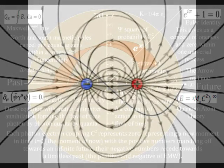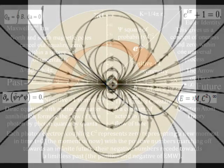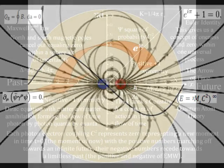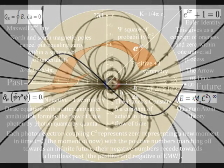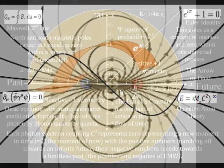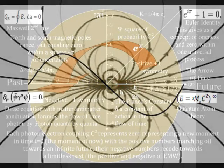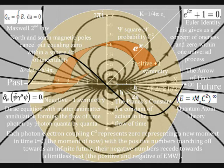On the lower left-hand side of the diagram, we have Dirac's equation, that also equals zero, representing zero time, with matter-antimatter annihilation, forming the magnetic moment, or dipole moment, with the future coming into existence photon by photon, quanta by quanta.